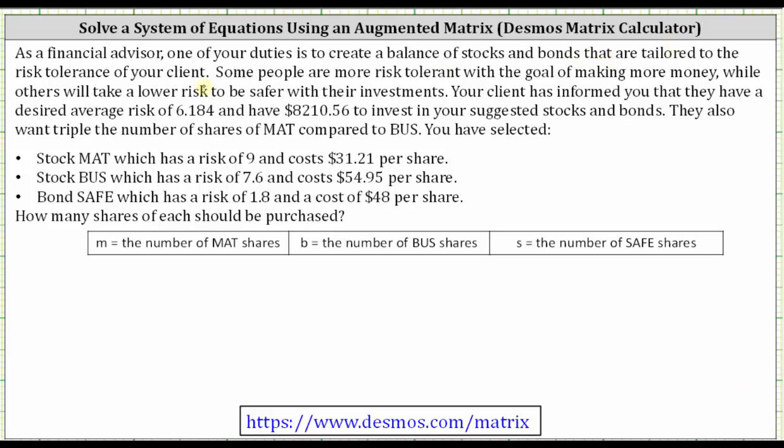As a financial advisor, one of your duties is to create a balance of stocks and bonds that are tailored to the risk tolerance of your client. Some people are more risk tolerant with the goal of making more money, while others will take a lower risk to be safer with their investments. Your client has informed you that they have a desired average risk of 6.184 and have $8,210.56 to invest in your suggested stocks and bonds. They also want to triple the number of shares of MAT compared to BUS.